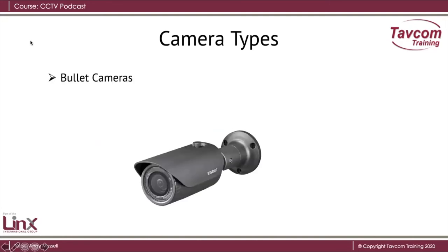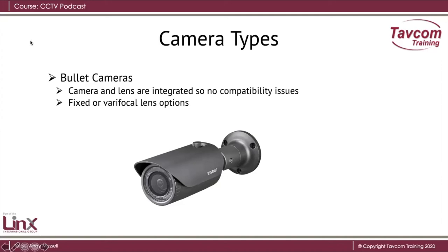Bullet cameras. With a bullet camera, the camera and lens is integrated, so there's no compatibility issues between the camera and the lens. We can have fixed or vary focal lens options. Internal and external versions are available, and IR lighting can be integrated. In this particular example, it's an external camera with a housing and a bracket, and you can see the IR surrounding the lens.